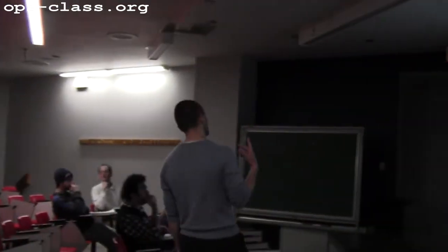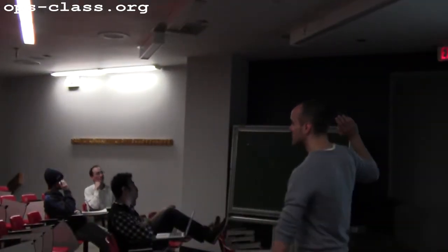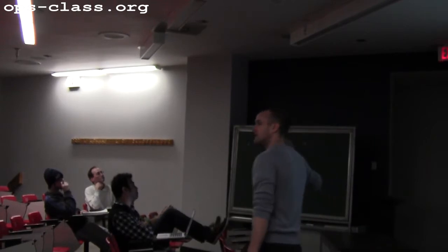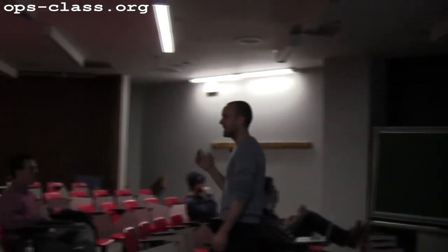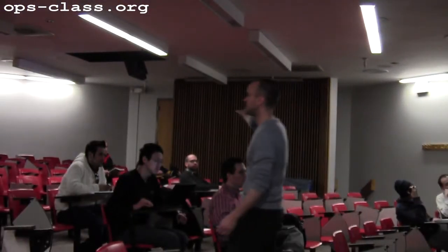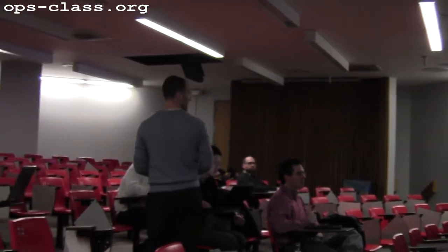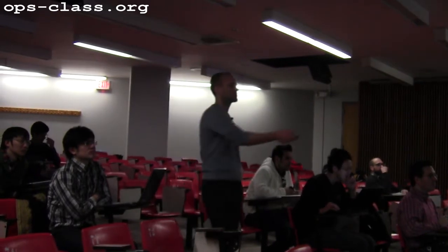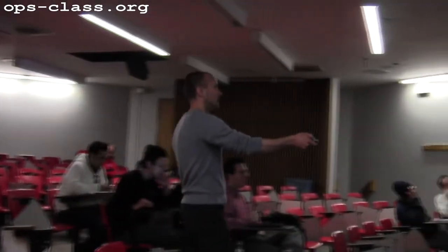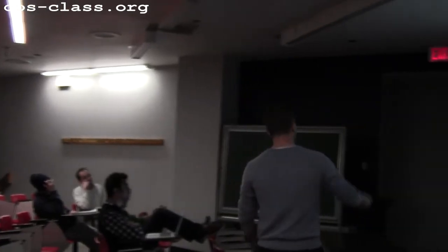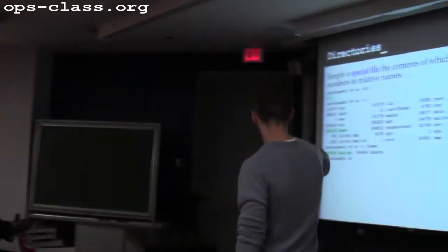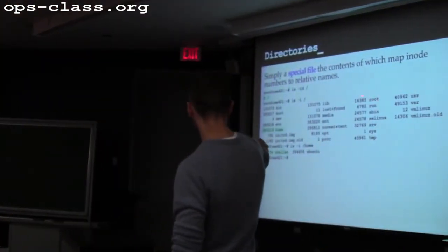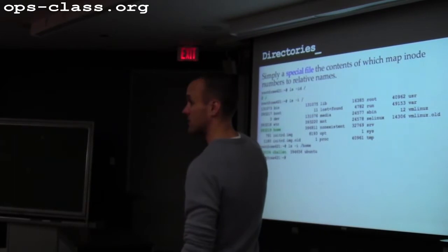Directories are just special files that contain a series of path name to inode mappings. If I list the contents of a directory by inode, I can see the mapping between the relative path names and the inode numbers.